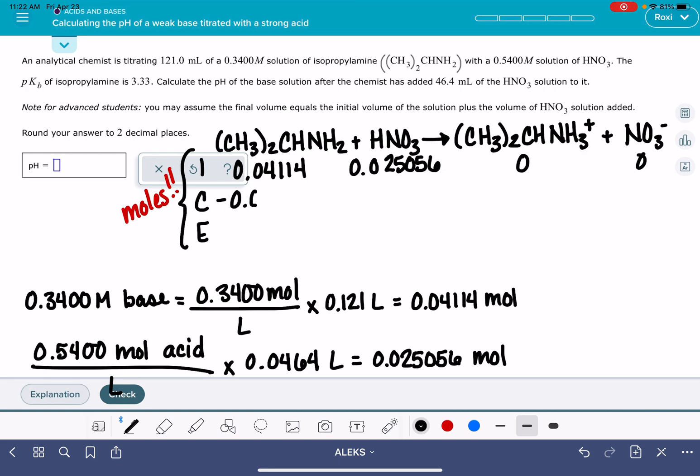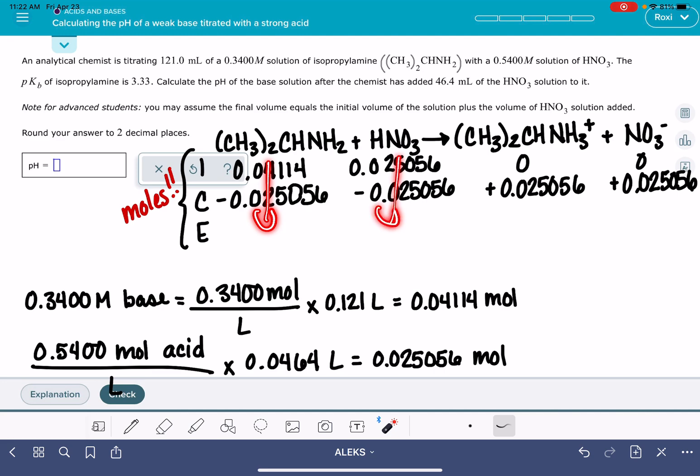That's how much is going to react. So we're going to say 0.025056 and minus 0.025056 and plus 0.025056. Then we're going to do the math in each one of these columns on the ice table. 0.04114 minus 0.025056.